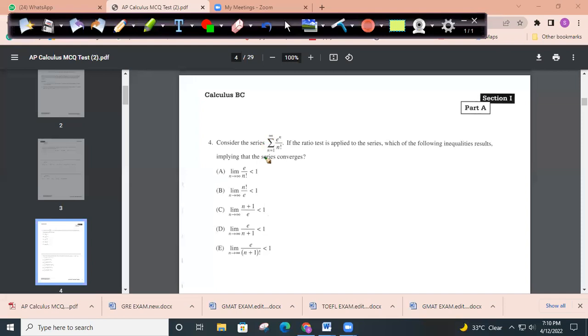Consider the series sigma n equals 1 to infinity e^n by n factorial. If the ratio test is applied to the series, which of the following inequalities result, implying that the series converges?